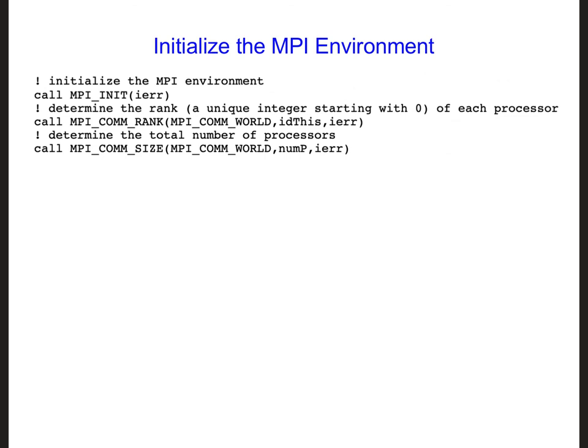And these are all integers. So we need to declare integer, the error flag ierr, also id_this, which is going to have the processor number, and the total number of processors, num_p.